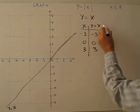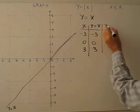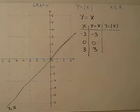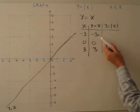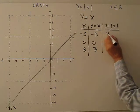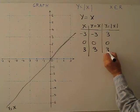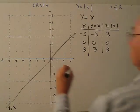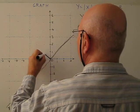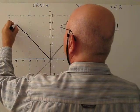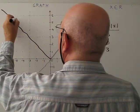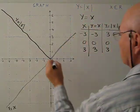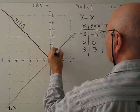Now, how can I draw Y equals absolute value of X? Let's use the same table of values. As you know, absolute value is always positive. So negative 3 becomes positive 3, 0 stays 0, and 3 stays 3. If I plot these points, I get the V-shape — this is Y equals absolute value of X.